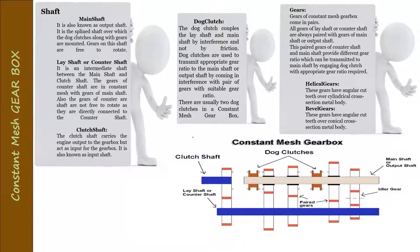Regarding gears: there are two types — helical gears and bevel gears. Gears of the constant mesh gearbox always come in pairs. All gears of the lay shaft or counter shaft are always paired with gears of the main shaft or output shaft. These paired gears provide different gear ratios, which can be transmitted to the main shaft by engaging the dog clutch with the appropriate gear.